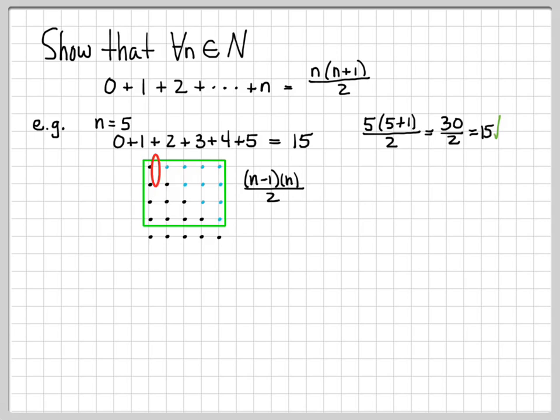Because this side has a, in general, has a length of n minus one, in this case, four. And this side of the rectangle has a length of n, in this case, five. And then only half of the dots inside there are black, the other half are blue. So that's why this equation represents the number of black dots inside that rectangle.